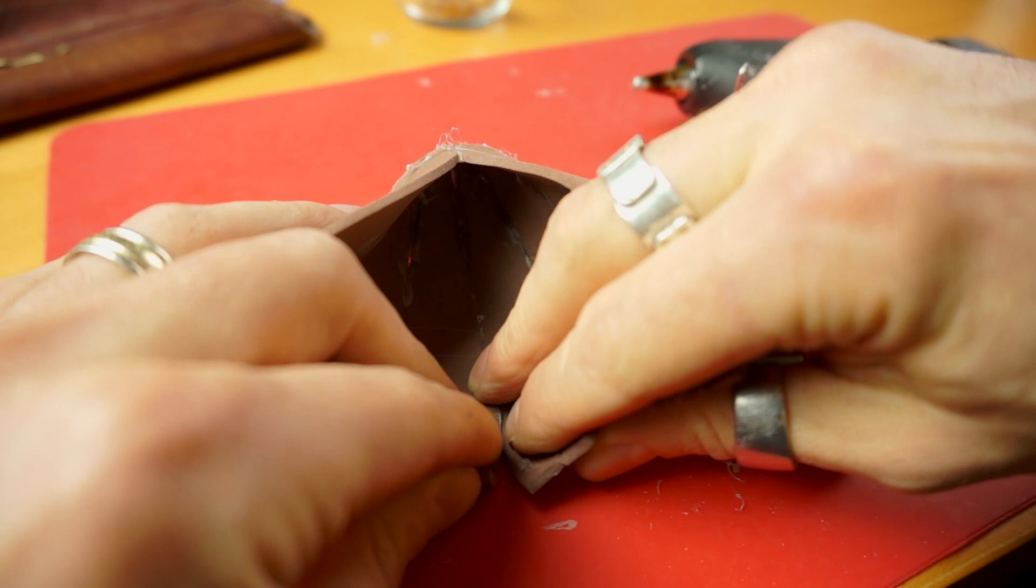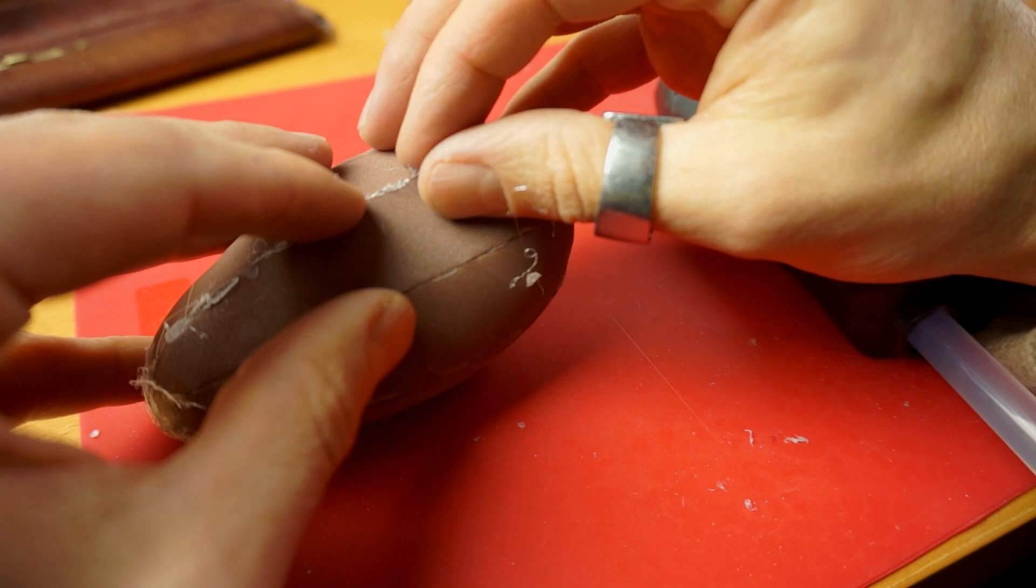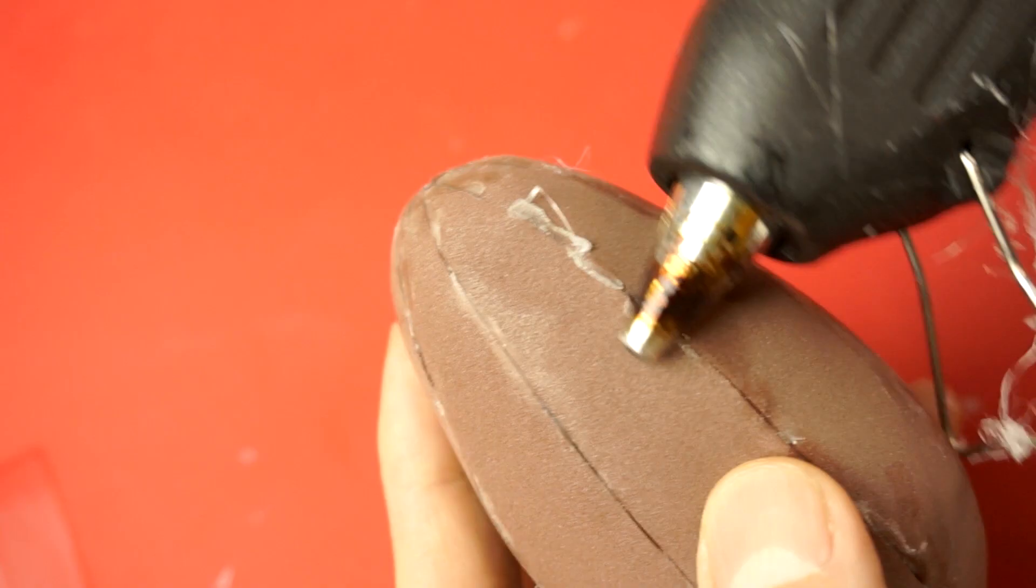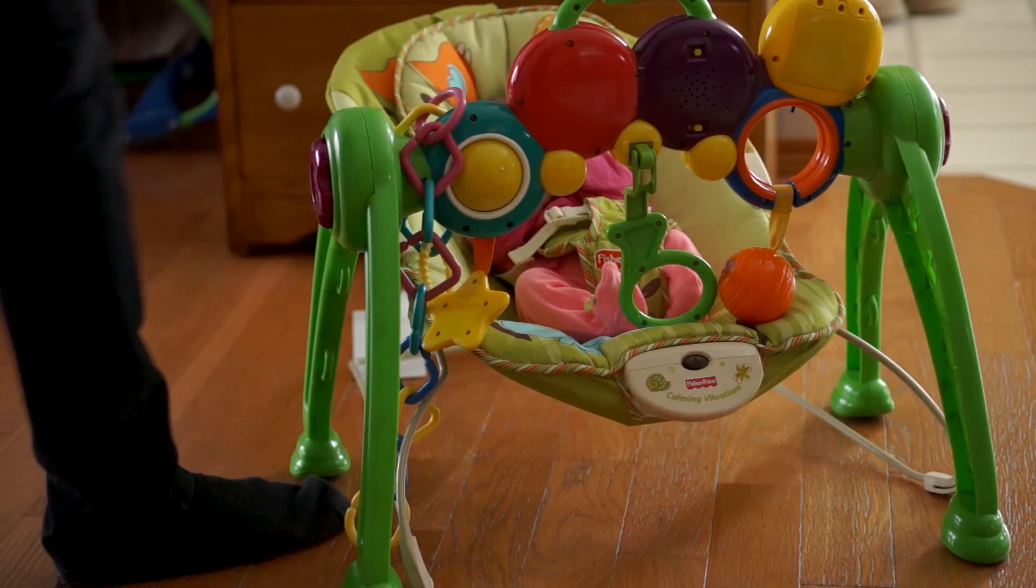The last seam is pretty tricky because you don't have the silicone mat to act as a backing, but do your best. Once it's together, clean up some of those funky seams with your glue gun. Looking super.